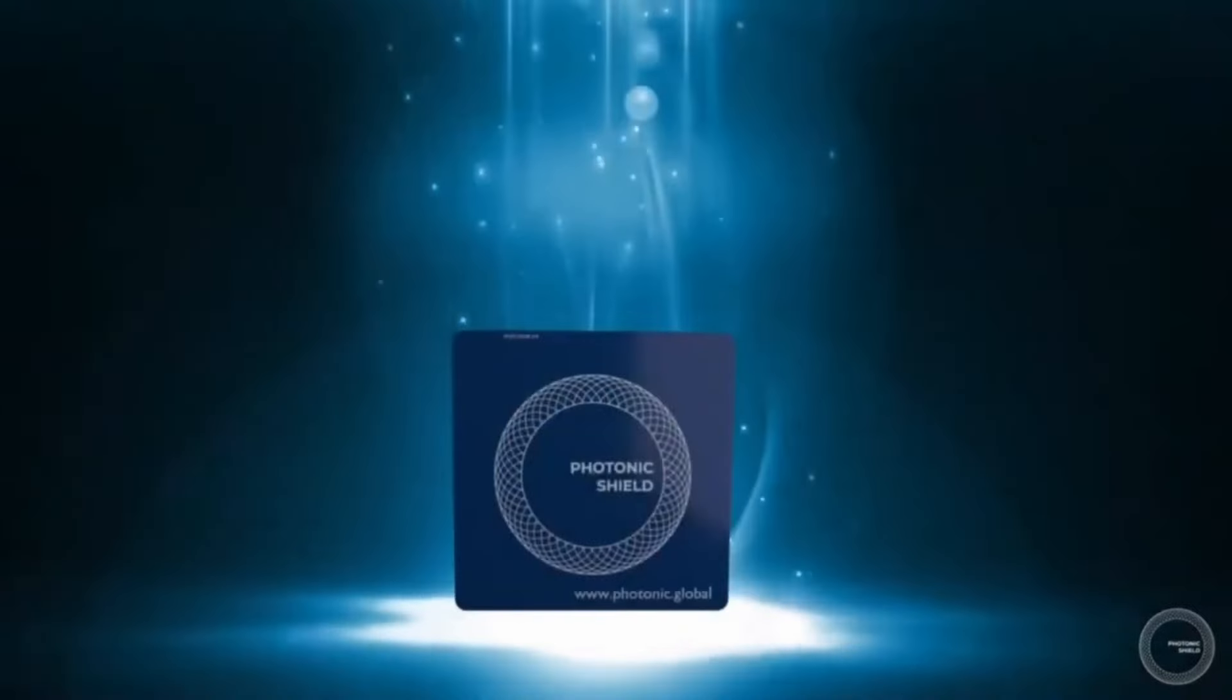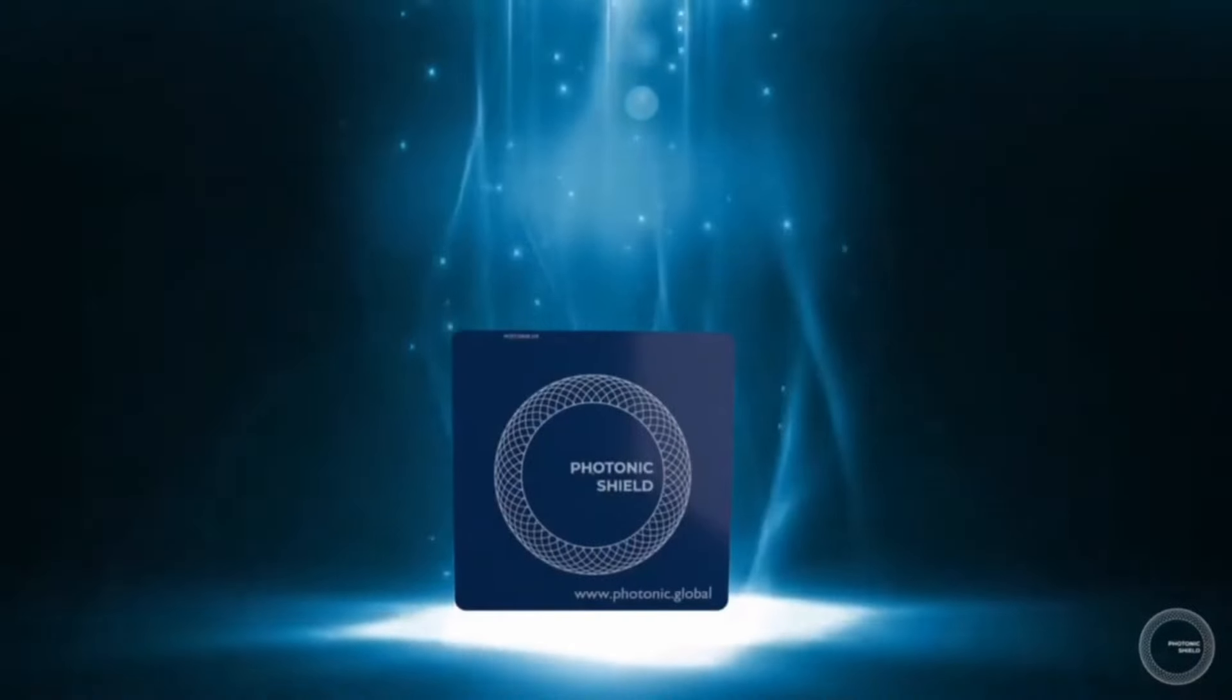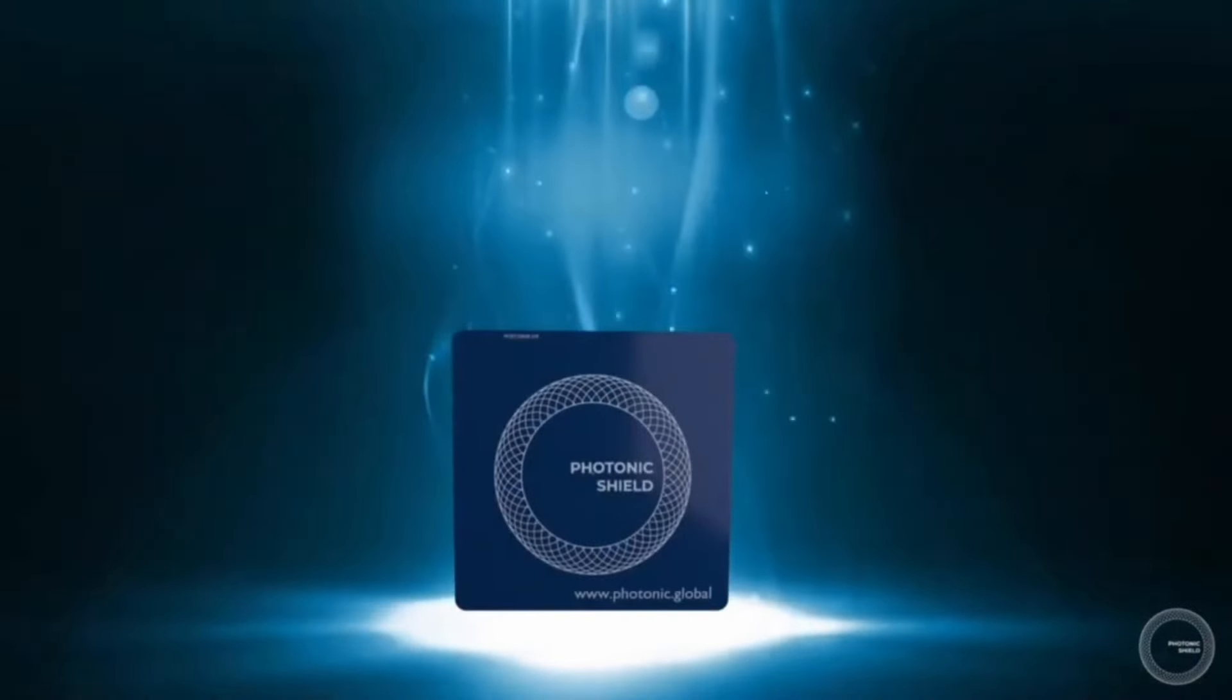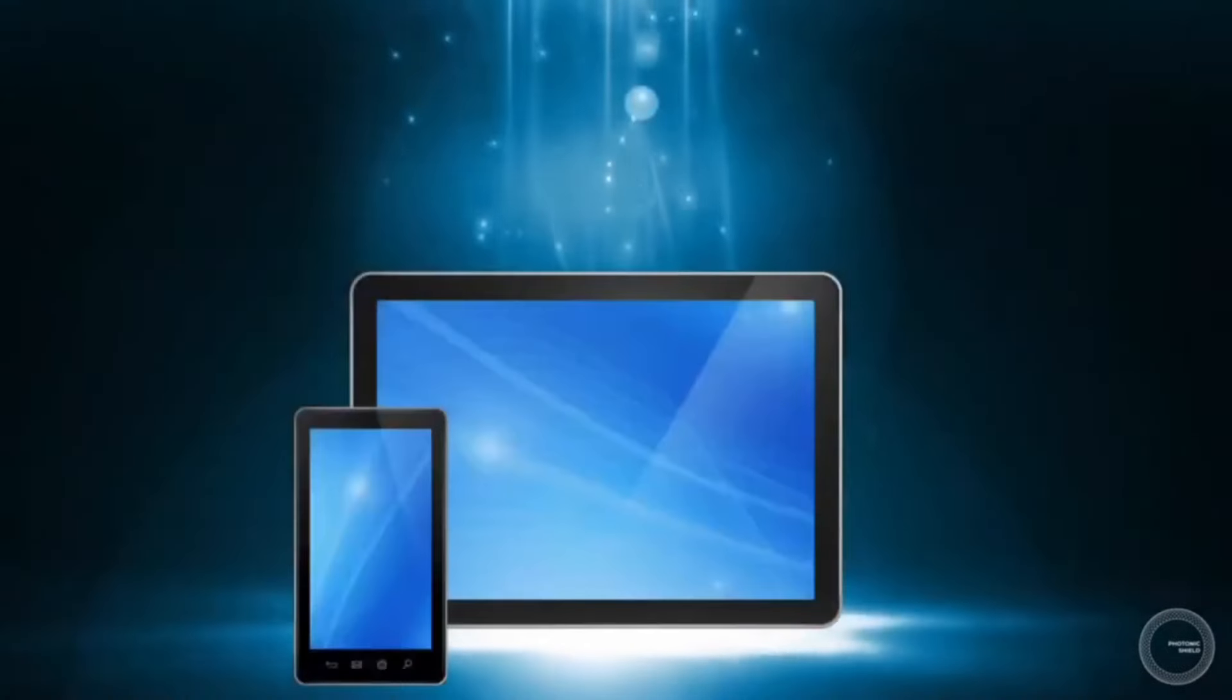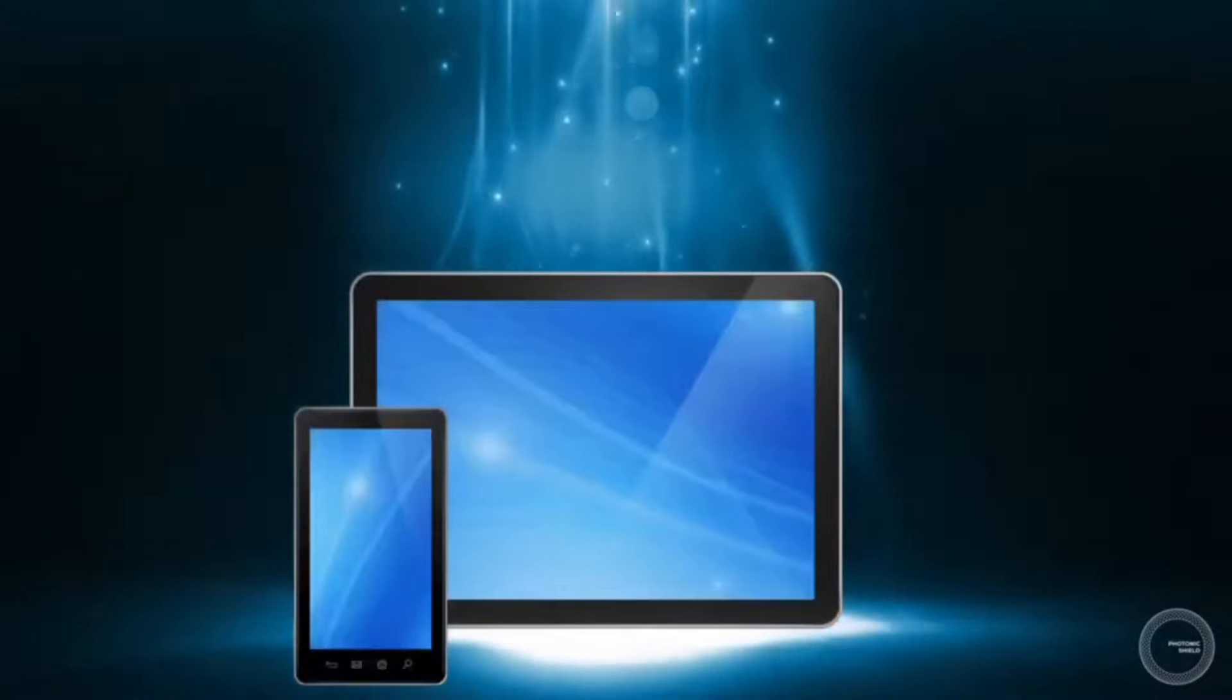The photonic square helps to protect against the negative effects of certain electromagnetic radiation by attaching it directly to devices such as mobile phones and tablets which emit such radiation.